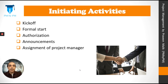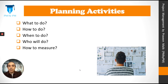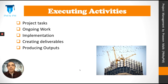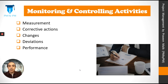Initiating involves kicking off something, formally starting something, authorizing a project, announcing to the world that we are starting the project — but above all, assigning a project manager is a major part of initiating activities. Planning activities involve asking questions like: what do we do, how to do these things, when do we do these things, who will do these things, and how to measure. When we answer these questions, we have our plan ready. Executing activities include actual project tasks, ongoing work, implementing something, creating deliverables — internal or external for the client — and producing outputs. Monitoring and controlling means measuring something, taking corrective actions, making changes, taking care of deviations, and checking the performance of the project. Finally, closing activities, just like initiating, are formal — they include documenting everything, handing over to the client, and making final reports.